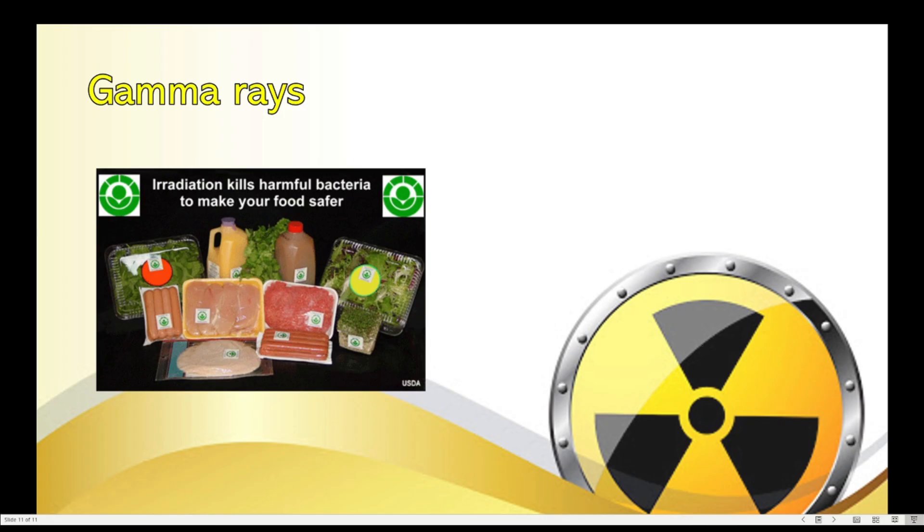Next application of gamma rays is what we call irradiation. So, irradiation can help extend the shelf life of food. We know that food will spoil once it has germs. So, irradiation using gamma rays kills harmful bacteria. Therefore, making your food safer and have a longer shelf life.